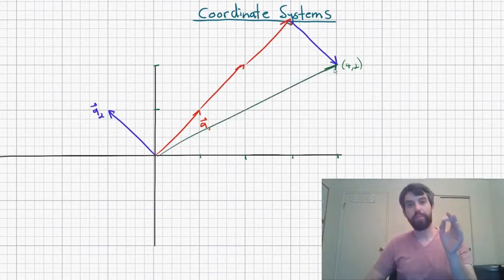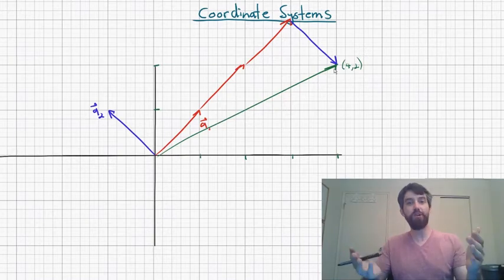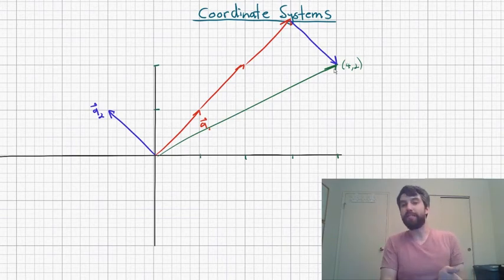So here's the point. There are multiple ways to get to this point 4, 2. If I have the standard basis, I'm going to go 4 in the E1 and I'm going to go 2 in the E2. But if I have some other basis, I'm not going to go and stretch along this other basis 4 and 2.